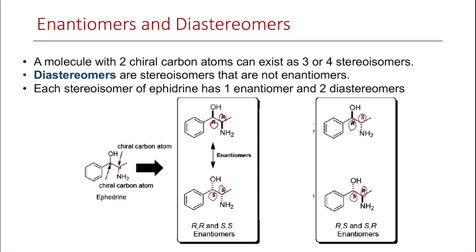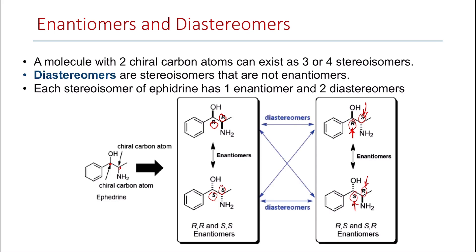The enantiomers must have a completely opposite configuration at both carbon atoms. So R,R will be the enantiomer of the S,S stereoisomer. However, if only one of the two configurations has changed, they are not going to be enantiomers. Similarly, R,S and S,R are enantiomers because both configurations are opposite. If only one of these changes and the other doesn't, these are called diastereomers.